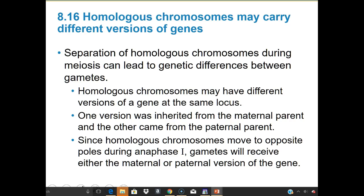Separation of homologous chromosomes during meiosis can lead to genetic differences between gametes. Homologous chromosomes may have different versions of a gene at the same locus — one version from the maternal parent and one from the paternal parent. Since homologous chromosomes move to opposite poles during anaphase I, gametes will receive either the maternal or paternal version of that gene.